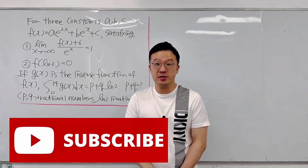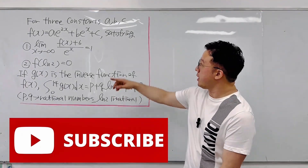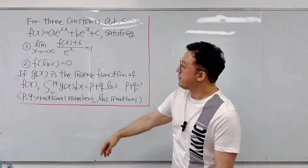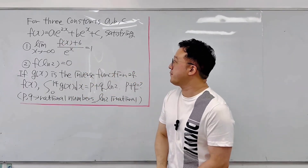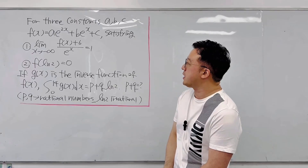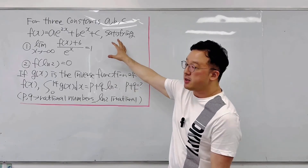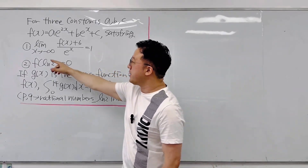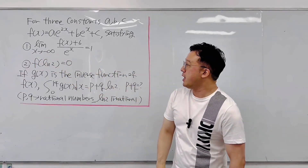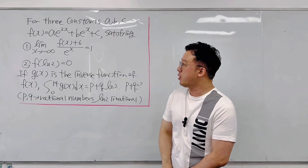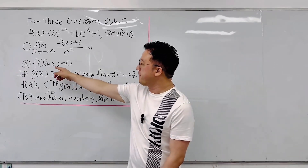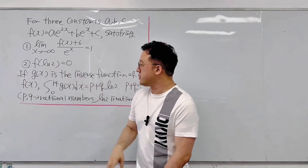We have an interesting calculus question. For three constants a, b, c, your f of x is a times e to the power of 2x plus b times e to the power of x plus c, satisfying two conditions. One is the limit as x goes to negative infinity of f of x plus 6 over e to the power of x is equal to 1. And f of ln 2 is equal to 0.